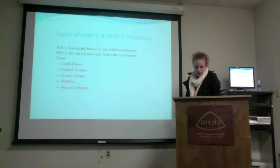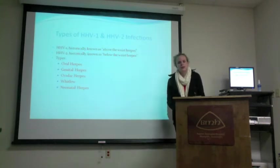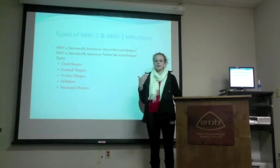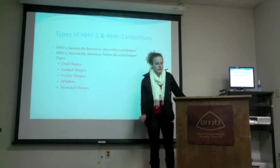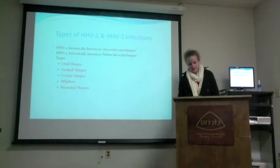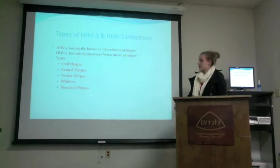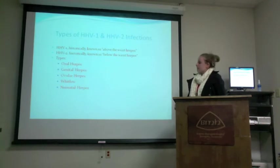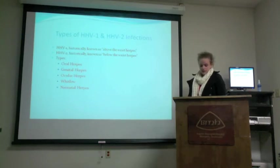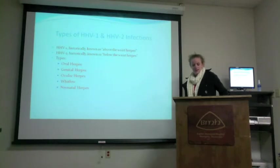There are quite a few types of herpes 1 and 2. Historically, the rule was herpes 1 was above the waist and herpes 2 was below the waist, but scientists have discovered that that's not necessarily true. The types include oral herpes, genital herpes, ocular herpes, Whitlow, and neonatal herpes. Now Sonye will come up and discuss each one in detail as well as discuss preventative measures.